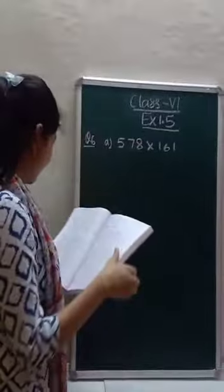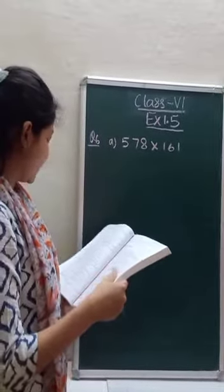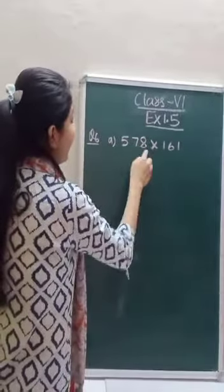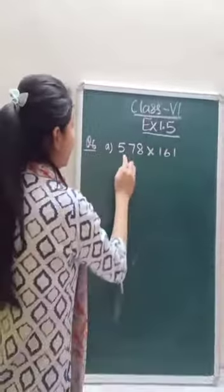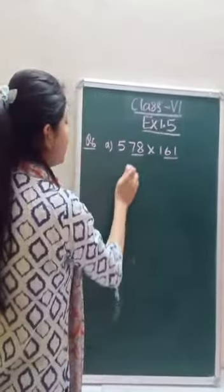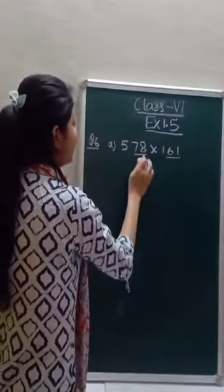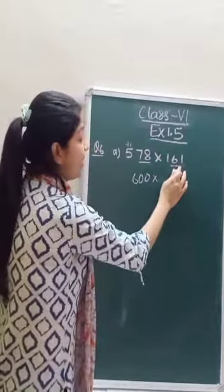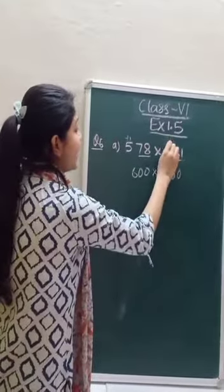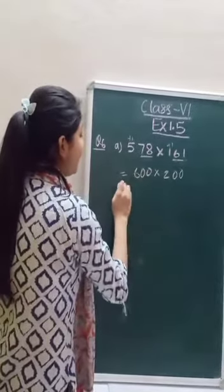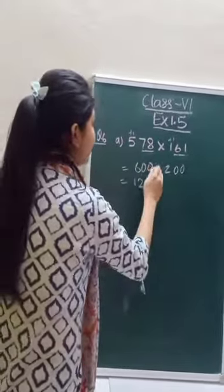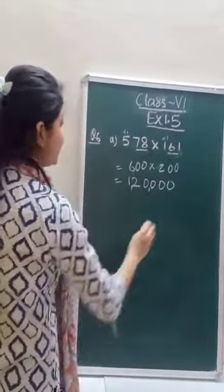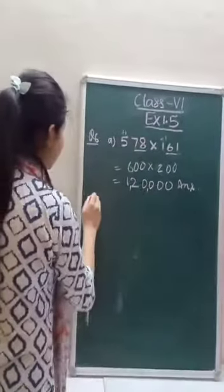Question number 6: estimate the following products by rounding off each factor to its greatest place. The greatest place is hundreds. For nearest 100, see the last two digits — 78 is greater than 50, so put zeros in ones and tens and add 1 in hundreds. Similarly, 61 is greater than 50, so put zeros and add 1 in hundreds. So we get 600 times 200, which equals 1,20,000. You have to do part B similarly.